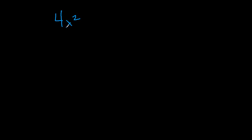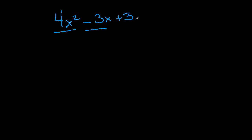Let's go ahead and talk about the problem that you've presented to me, and it is 4x squared, or x to the second power if you want to say that — it's easier to say squared. 4x squared minus 3x plus 3. First thing that catches my eye: we have a coefficient and a negative number.